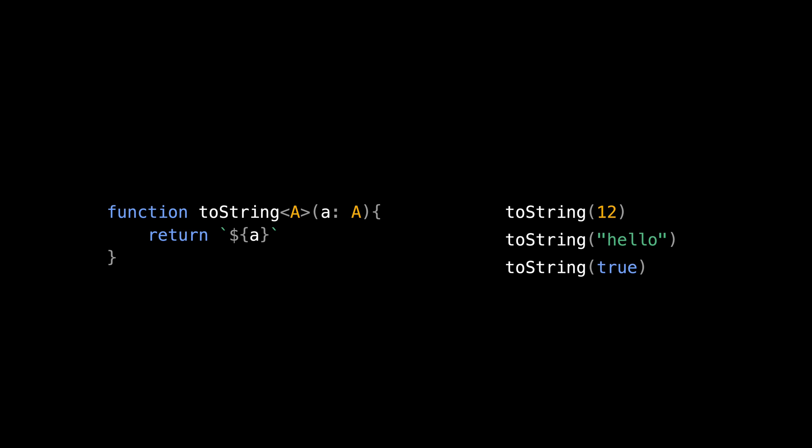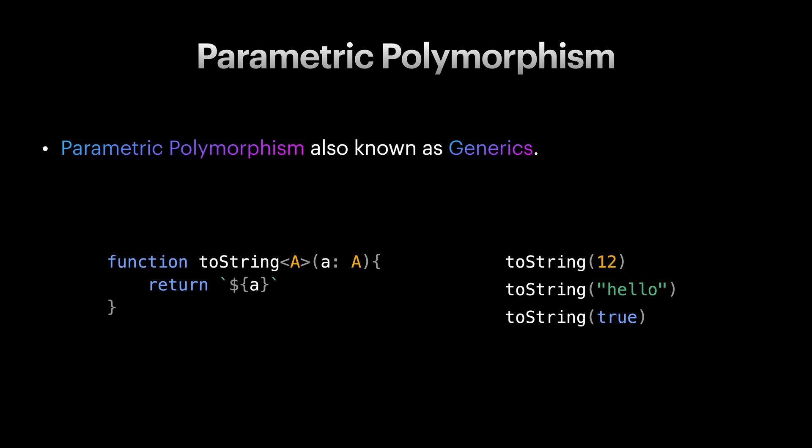This kind of polymorphism is called parametric polymorphism. In other words, parametric polymorphism, also known as generics, is a form of polymorphism in functional programming allowing to define a single abstracted implementation for a wide range of types. But this video is not about parametric polymorphism.